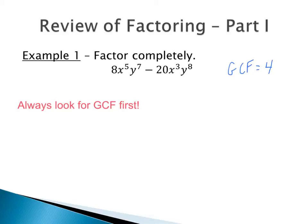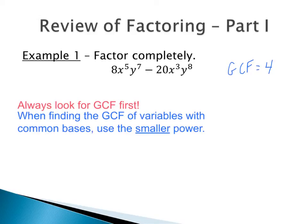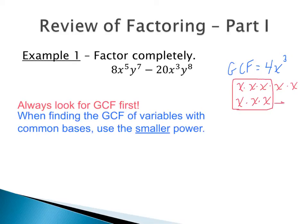For variables, we look at like bases. For x to the fifth and x to the third, we take the smaller power, which is x to the third. That's because x to the fifth is x·x·x·x·x and x to the third is x·x·x — they have three x's in common. Applying the same idea to y to the seventh and y to the eighth, the greatest common factor for the y terms is y to the seventh.